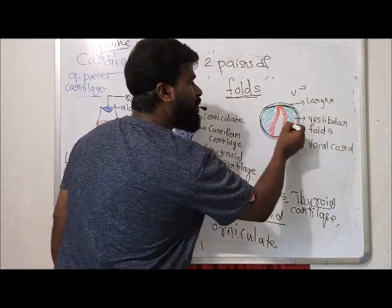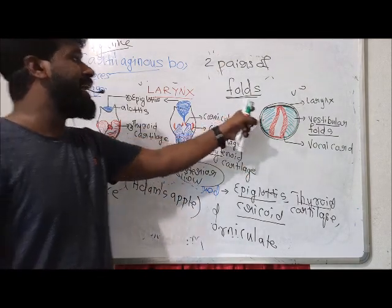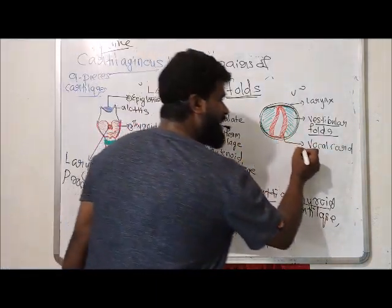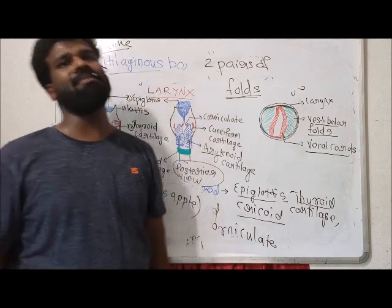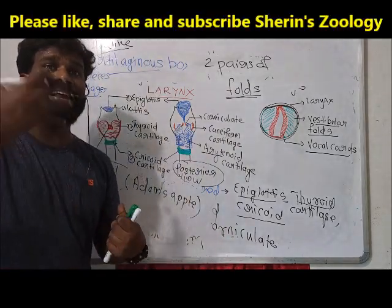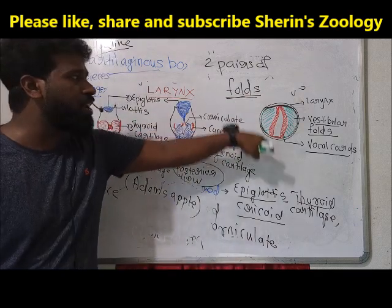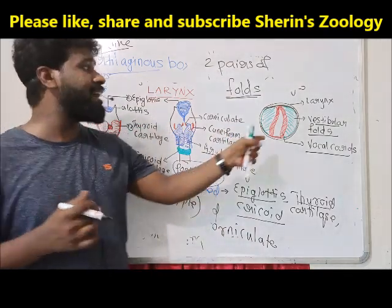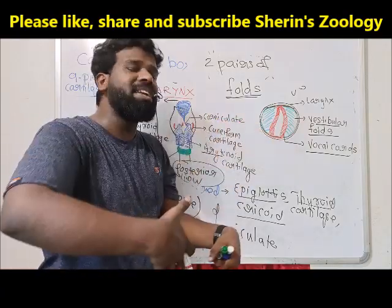Among the two pairs of folds in the inferior wall of the larynx, the outer pair of folds are called vestibular folds, and the inner folds are called vocal cords. These vocal cords are responsible for producing sound in man. Vibrations in the vocal cords produce voice.